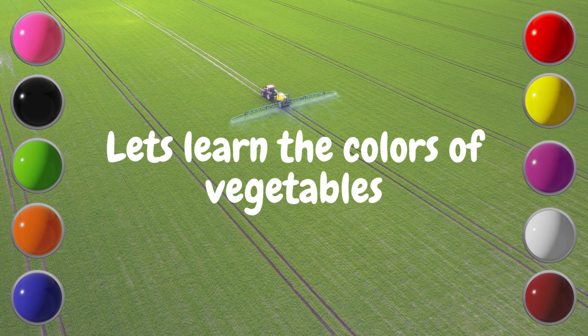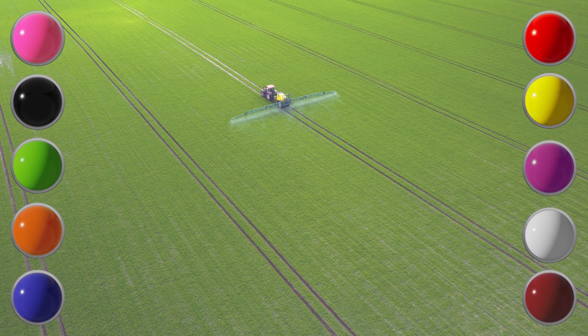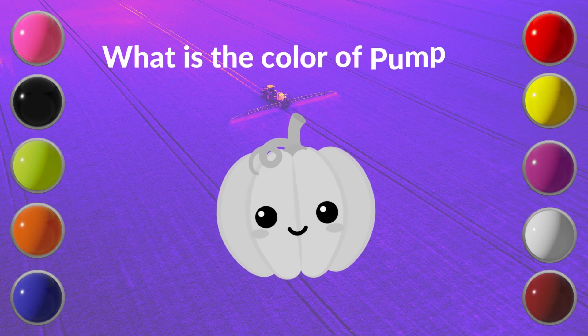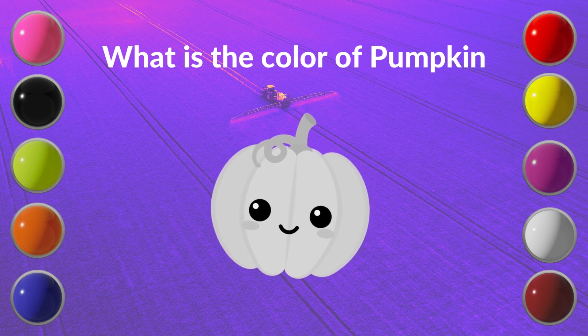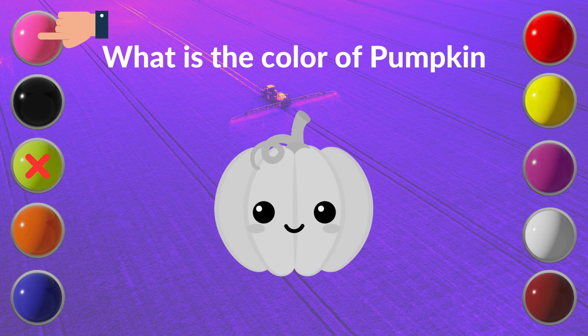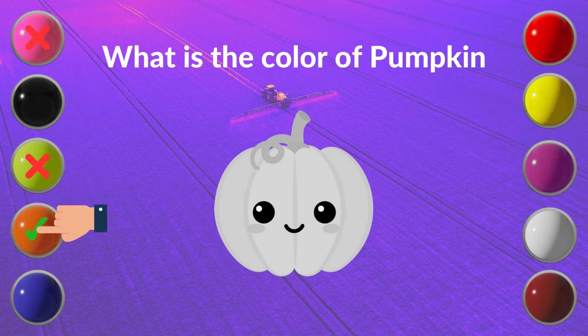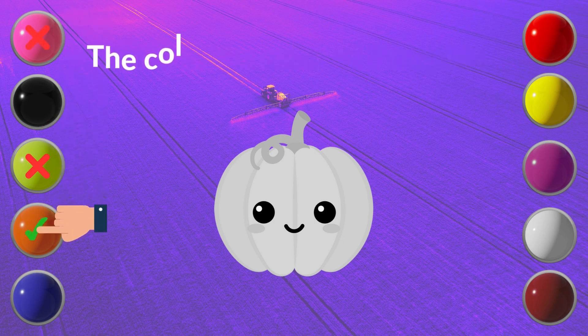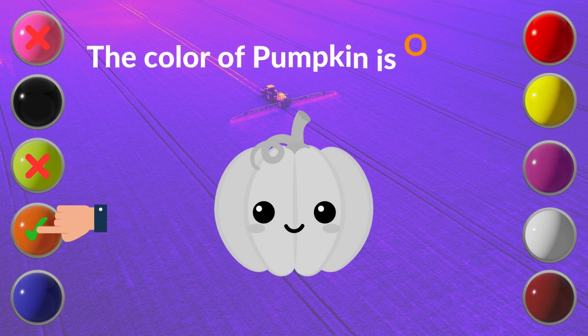Let's learn the colors of vegetables. What is the color of pumpkin? The color of pumpkin is orange.